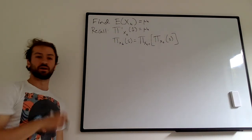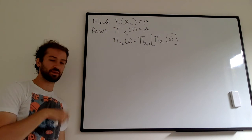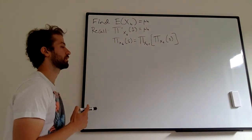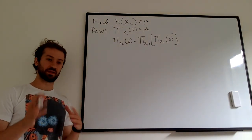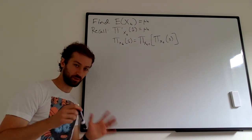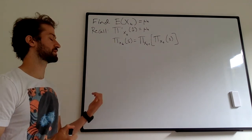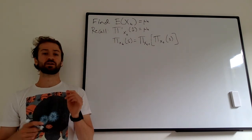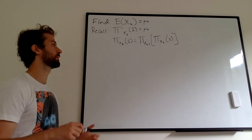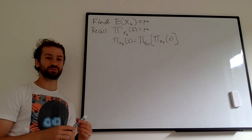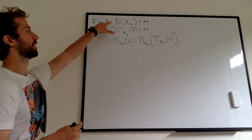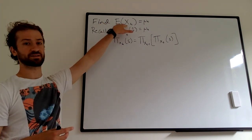In our last video about branching processes, we showed a very cool graphical proof about why under certain conditions — specifically when the mean of the offspring distribution is one or less — the population will certainly go extinct with probability of extinction equal to one. This is going to be our final video on branching processes. We're going to go back to the start and think about what the expected value of the branching process is at time t — so in the 20th generation, how big do we expect the process to be?